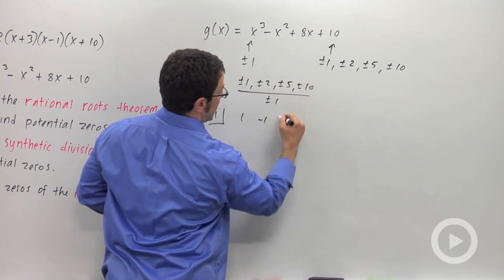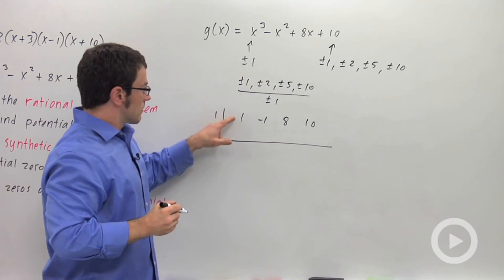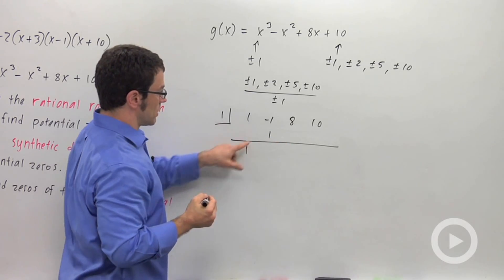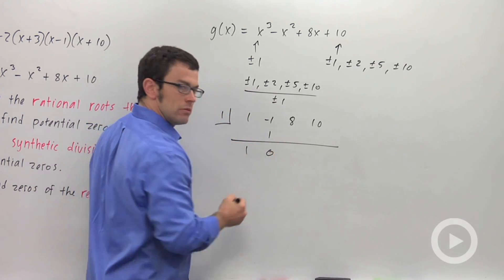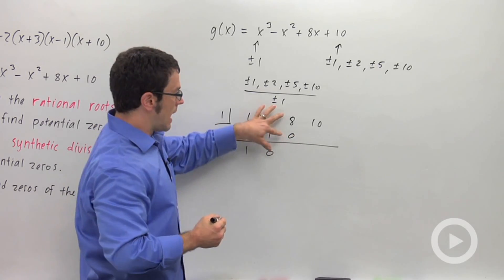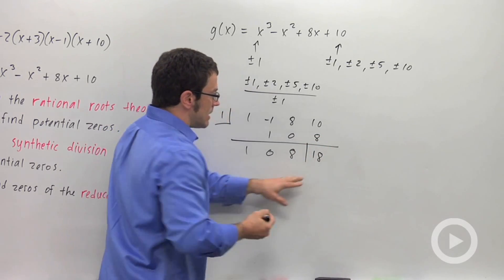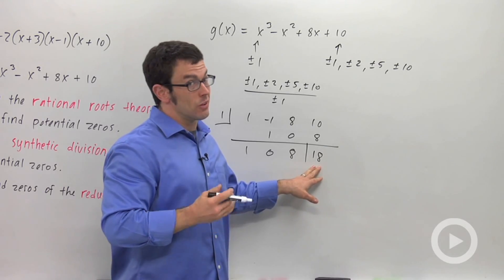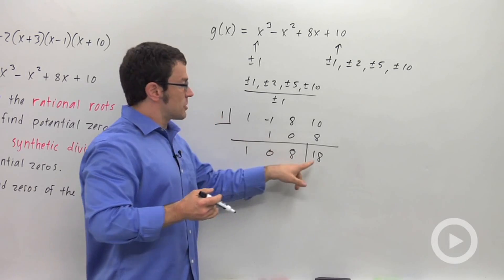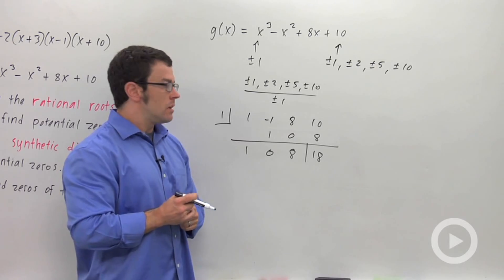So the way synthetic division works is I'm using 1 as my zero. I write the coefficients of this polynomial down here: 1, negative 1, 8, and 10. The 1 comes down. I multiply, write the result here. So 1 times 1 is 1. Then I add, and I get 0. Then I multiply again. 1 times 0, and I write the result here. Then I add again, 8. And I multiply. 1 times 8 is 8. And I get 18. This last number is my remainder. Now the remainder is not 0, so 1 is not a zero. That means that g of 1 is actually 18, if you remember the remainder theorem. This is actually the value of the function g at 1. So 1 didn't work.